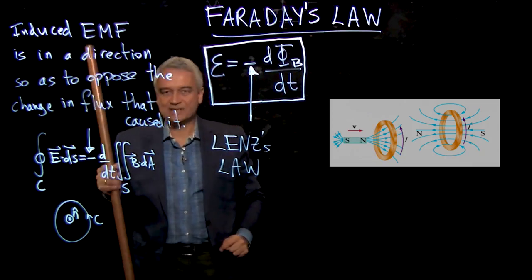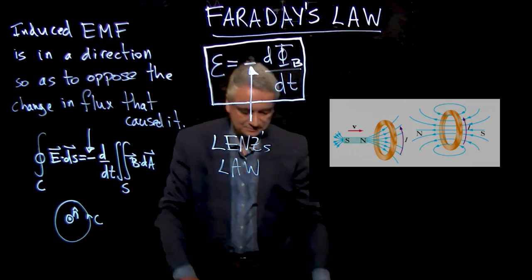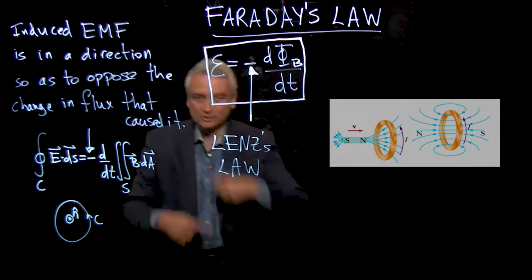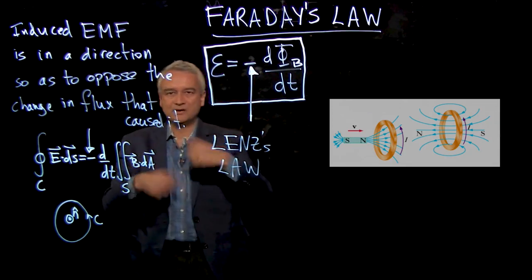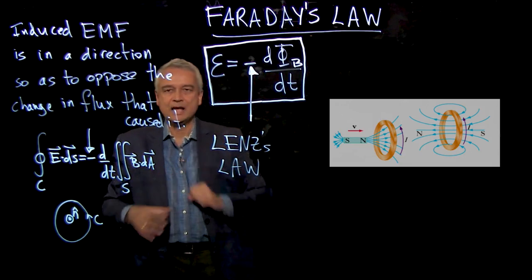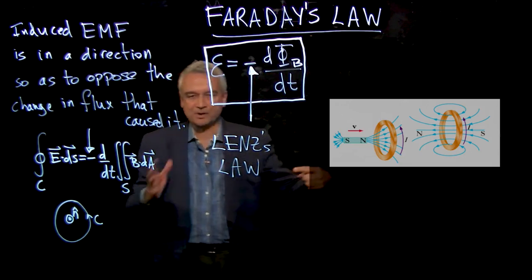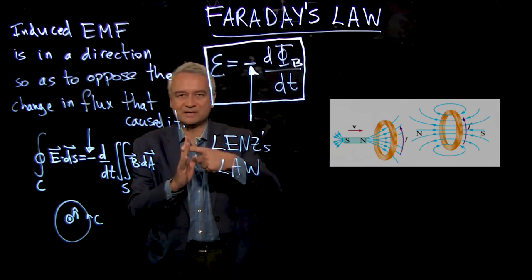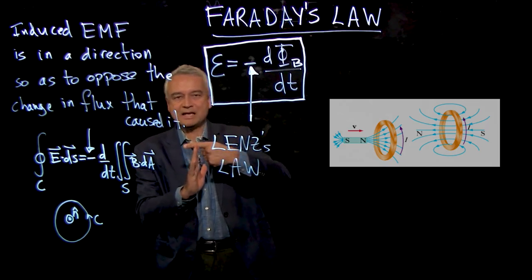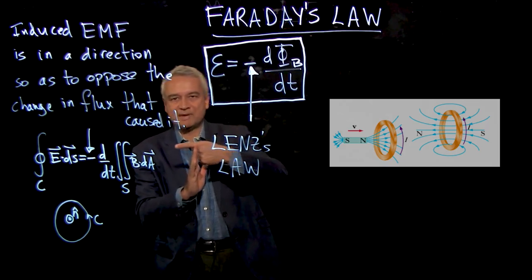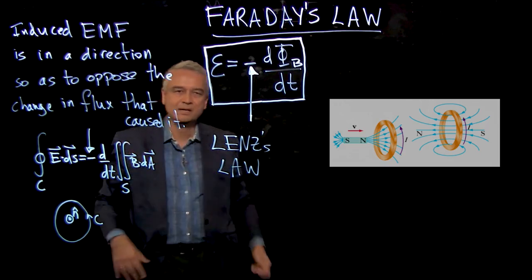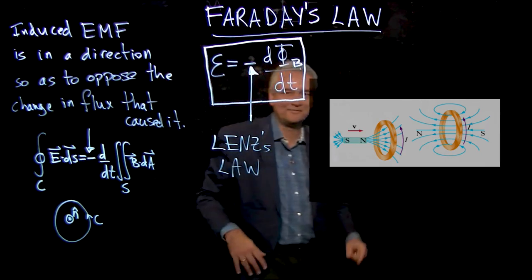The other demo that we did that this should remind you of is the one where I had a loop of wire and I shot a magnet through it. When the magnet was going into the loop, the current flowed one way — we saw that with the needle on the meter tipping one way. And then as I pulled the magnet out, the current flowed the opposite way.